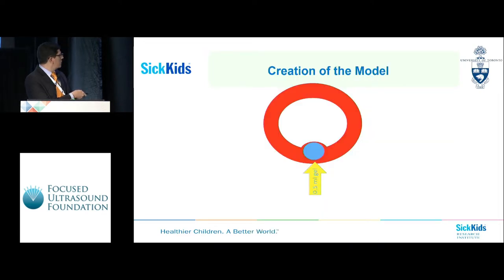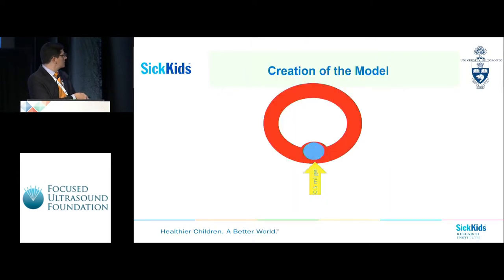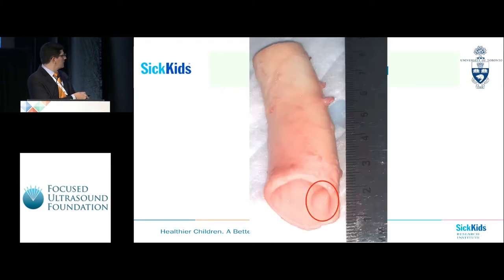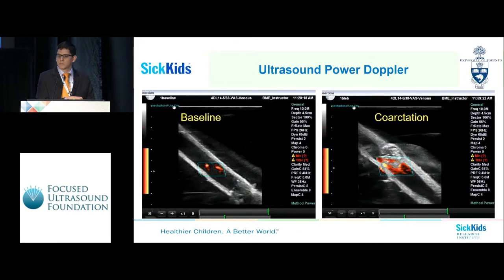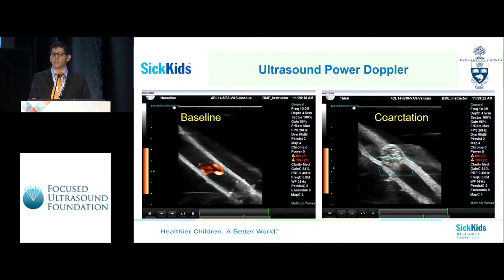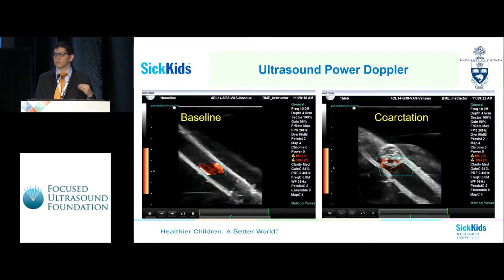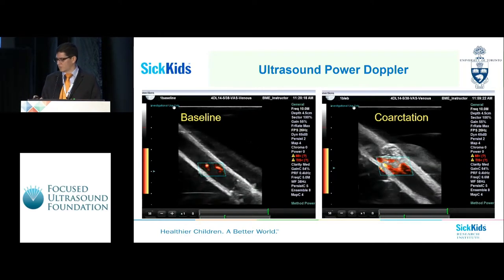This is the blob we have created with the skin pores in gelatin, as it can be seen exactly right here. Then, we performed ultrasound imaging. And as you can see on your left, the baseline aorta, and on your right, you can see the gelatin that was introduced into the lumen causing an obvious alteration of the flow.